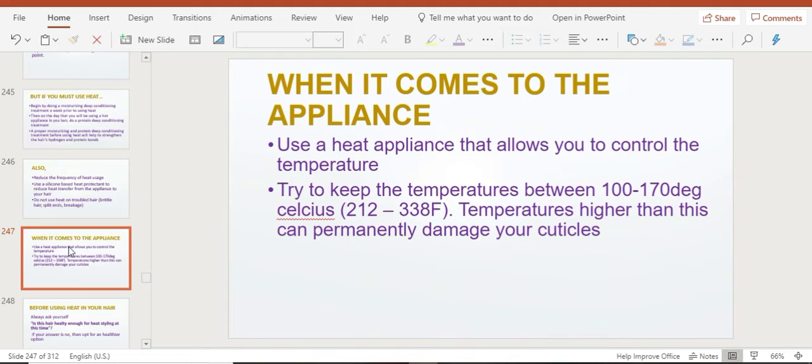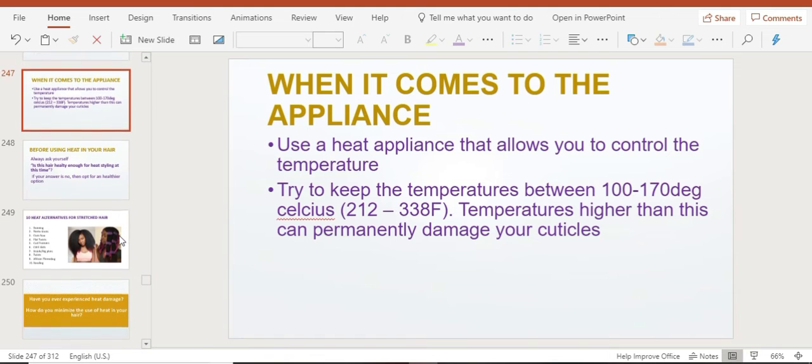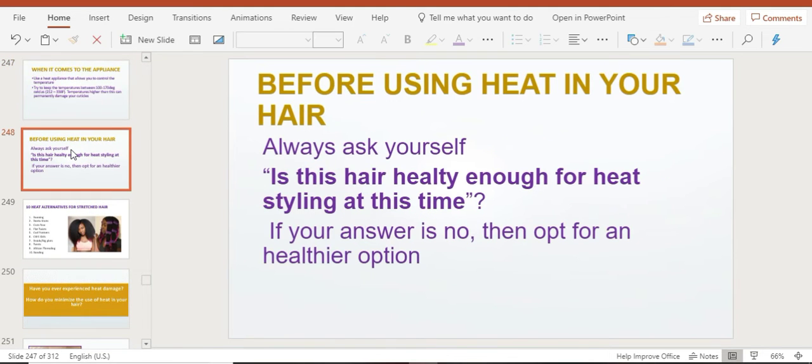When it comes to the appliance, you want to choose an appliance that you can actually control the temperature. It's recommended to keep the temperatures between 100 to 170 degrees Celsius or 212 to 338 Fahrenheit. Any temperature higher than this can permanently damage your chemicals, meaning you're going to have to cut off your hair and you can't really grow your hair as long as you wanted.